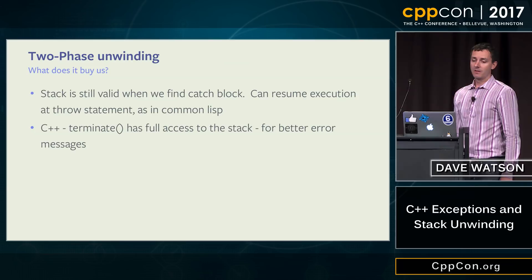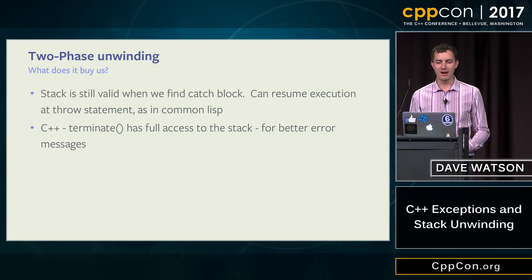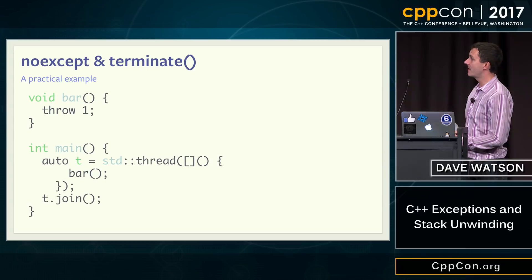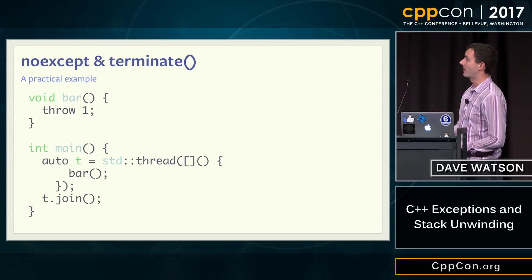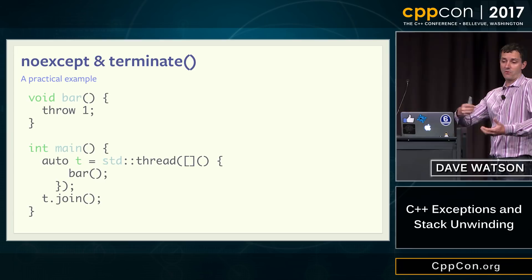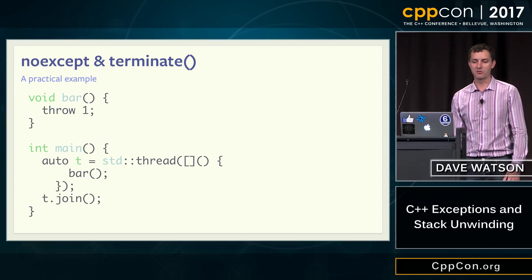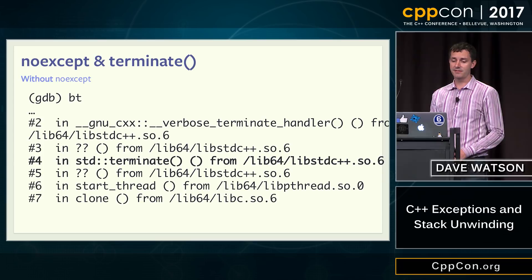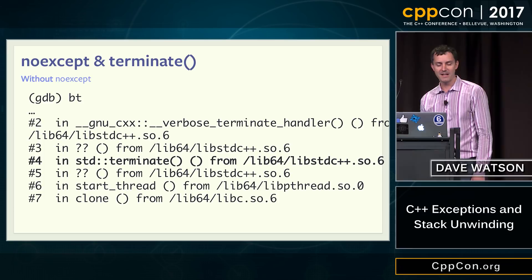Let's look at how terminate works in practice with a simple example. I'm using GCC to compile — I made main spawn a std::thread, throwing an exception from the thread bar. If everything works as described, we should have the full backtrace available in the debugger, showing bar threw an unhandled exception and then whatever started the thread. Here's what I got on Linux with GCC 6: the backtrace shows terminate was definitely called, but I don't actually see bar anywhere — just std::terminate and start_thread.